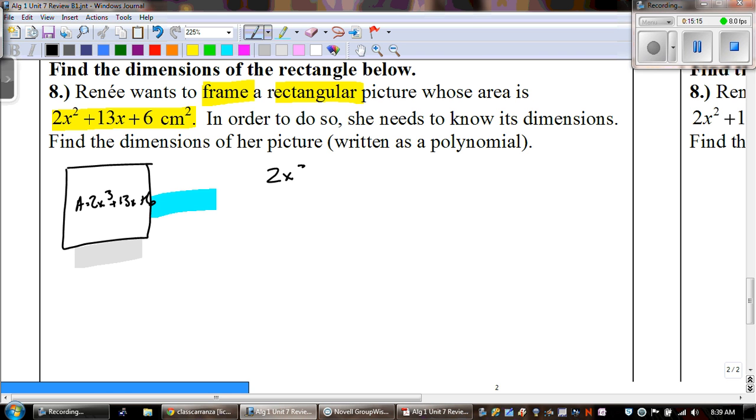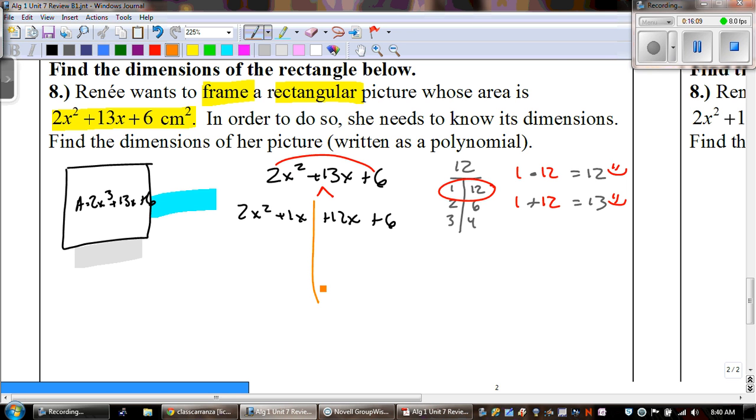So, we have 2x squared plus 13x plus 6. So, is there a GCF? Nope. So, that means we're going to multiply those two numbers. 2 times 6 is 12. The factors of 12 are 1 and 12, 2 and 6, 3 and 4. And out of those, we're looking for numbers that multiply to get to 12, but add to get to 13. And there's only one set that does that, and that's 1 times 12. And then 1 plus 12. So, we're going to go ahead and split the middle term. We get 2x squared plus 1x plus 12x plus 6.